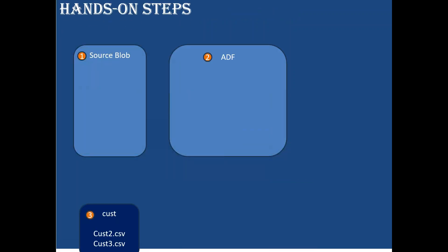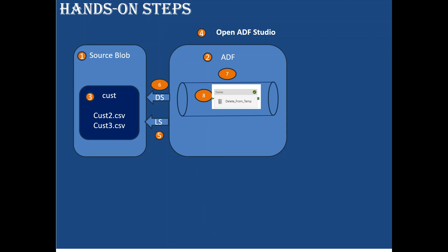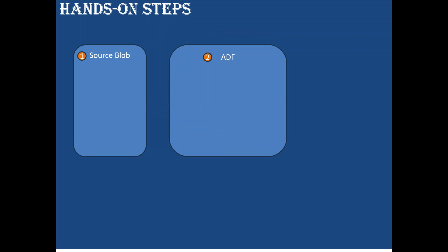The hands-on steps are: first, create the source blob, then create the ADF. Inside the source blob, upload the files. Then open Azure Data Factory, create a linked service and datasets. Add the pipeline with a delete activity and configure the timestamp — what files you want to delete and within what time range. Finally, refer the dataset, set the times, and run the pipeline.